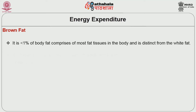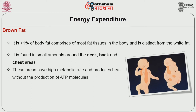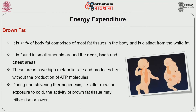Brown fat, less than 1% of body fat, comprises most fat tissues in the body and is distinct from white fat. It is found in small amounts around the neck, back and chest areas. These areas have a high metabolic rate and produce heat without the production of ATP molecules. During non-shivering thermogenesis — i.e., after a meal or exposure to cold — the activity of brown fat tissue may either rise or lower.